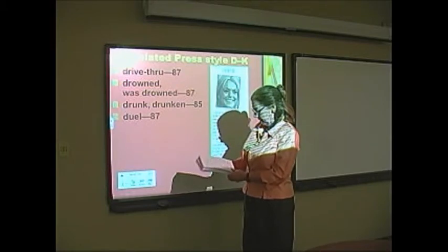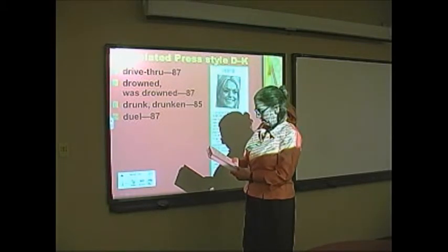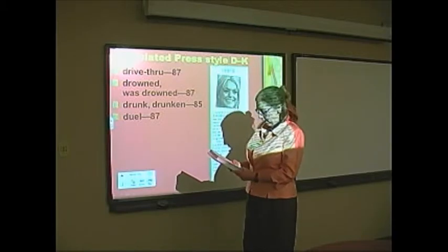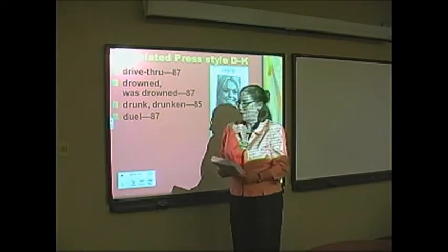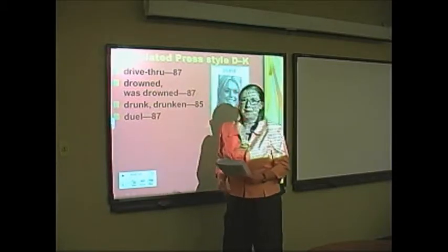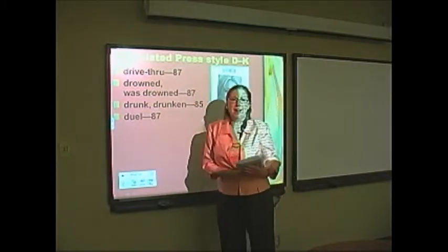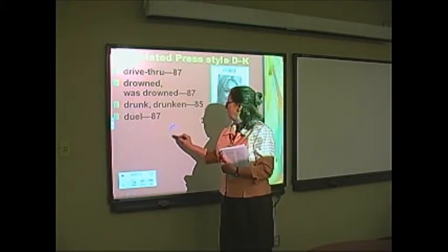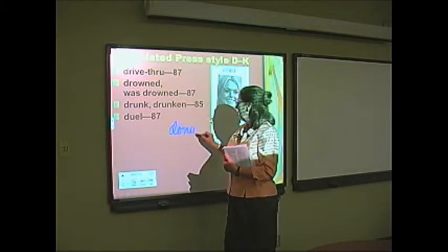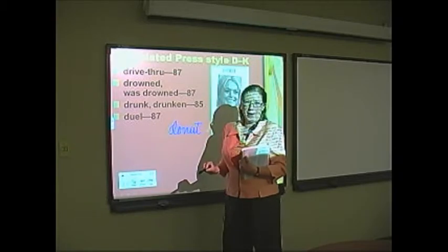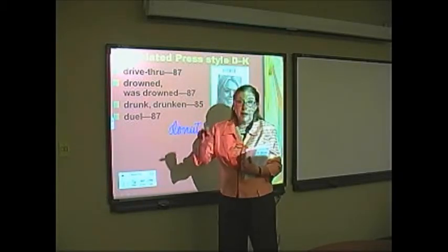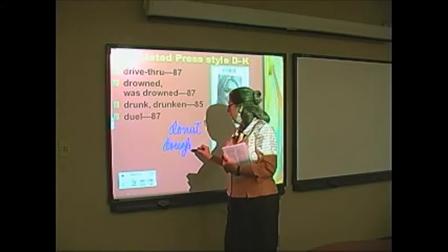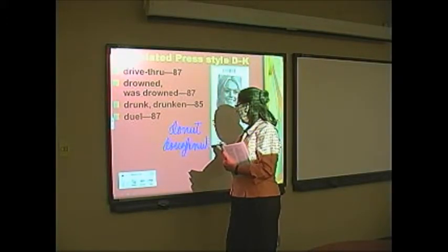Drive-through is on the left-hand column of page 87, covering both the noun and the adjective form. Notice the spelling with T-H-R-O-U-G-H. Interestingly, doughnut — that's the correct spelling even though Dunkin' Donuts doesn't use it. The word is dough, which is what it's made of — doughnut. So it drives me crazy that we spell drive-through one way but doughnut another.